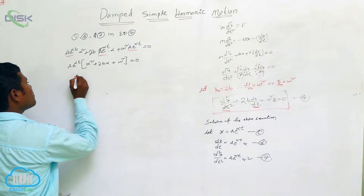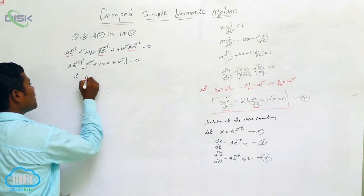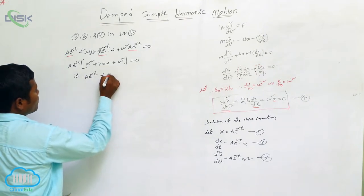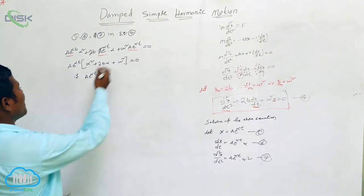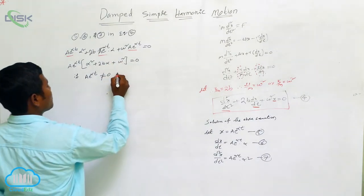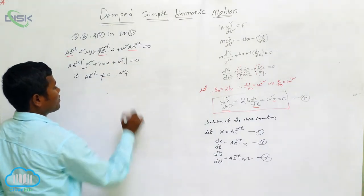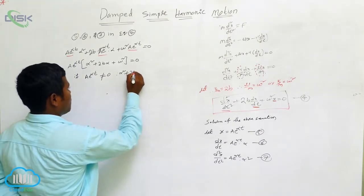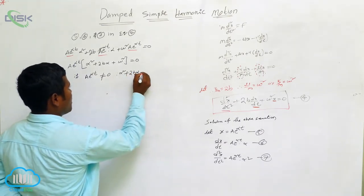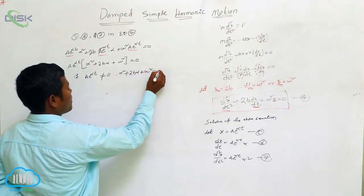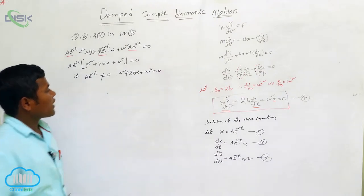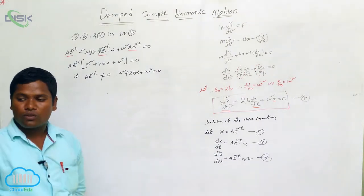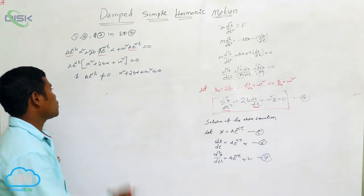Since A·e^(αt) is not equal to zero, the remaining part must be zero: α² + 2bα + ω² = 0. This equation looks like a quadratic equation, so we have to find the roots.